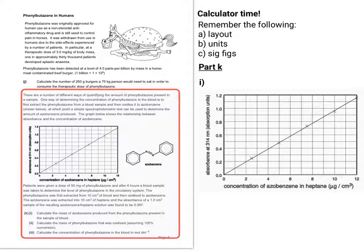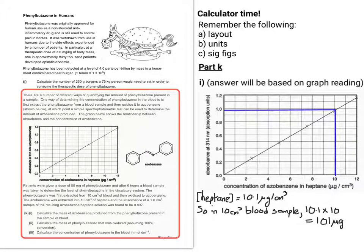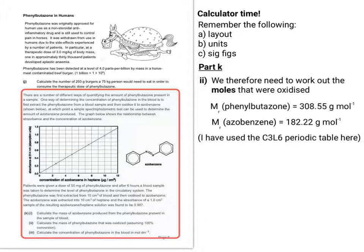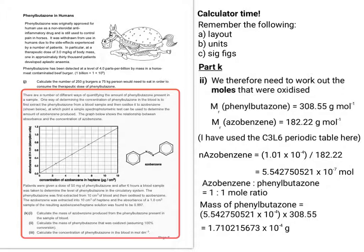So the first thing to do here is to work out the concentration of azobenzene from a reading of 0.997. So the absorbance is 0.997. So the answer will be based on graph reading, and I'm going to approximate it to about 10.1. So in 10 centimetres cubed of blood, there would be 10 times that amount, so 101 micrograms. So in the next part, they want you to calculate the mass of phenylbutazone that was oxidised. So we need the number of moles that were oxidised. So what we need to do is to use the MRs from the C3L6 periodic table, and I convert my micrograms into grams for my azobenzene, which gives me that amount of moles. So considering that the azobenzene and phenylbutazone have a 1 to 1 mole ratio, you can apply the same number of moles to phenylbutazone. Multiplying it by phenylbutazone's MR gives you 1.710215673 times 10 to the minus 4 grams.